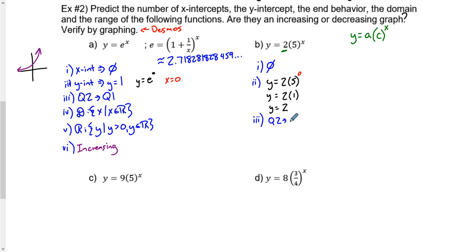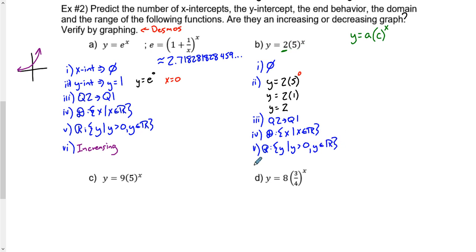Our end behavior still doesn't change — it's still going from quadrant 2 to quadrant 1. Domain is still x as an element of real numbers. Our range is still our y's that are greater than 0. And all we need to do to determine whether it's an increasing or decreasing graph is look at what our base is. In this case it's 5, which is certainly a number bigger than 1, which means we have an increasing graph. When we put this into our graphing technology, it will absolutely be an increasing graph, but the y-intercept is 2 instead of 1.